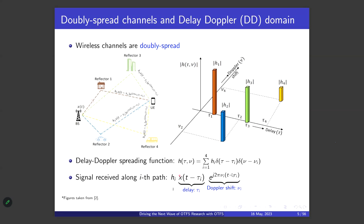Along the i-th path, if we transmit x(t), the received signal has a delay term x(t − τ_i), where τ_i is the delay of the i-th path, and an exponential term corresponding to Doppler shift ν_i. In the delay-Doppler domain we represent this channel with the spreading function — in this example as Dirac deltas at points (τ_i, ν_i) for each of the four paths.